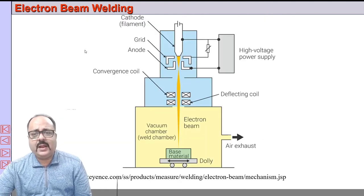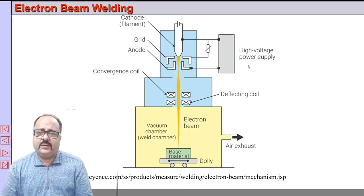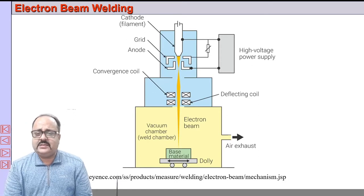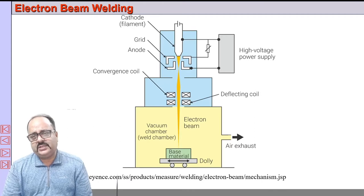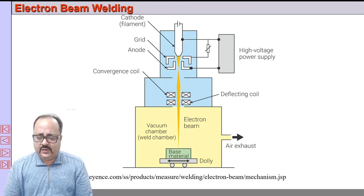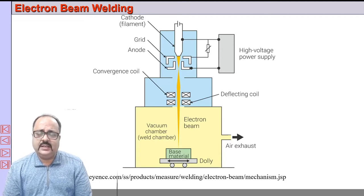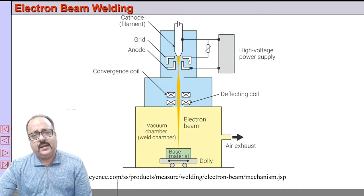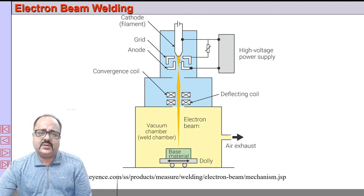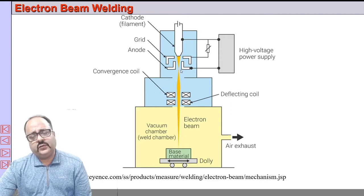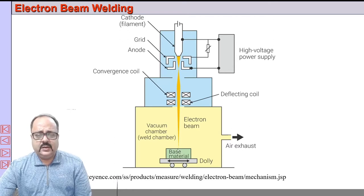A high voltage power source is applied, ranging from 30 kilovolts to around 170 kilovolts or more. The normal range is around 30 to 60 kV for medium voltage, and 100 kV and above for high voltage. This voltage is applied between a bias grid, the tungsten filament, and the anode. Due to thermionic emission, electrons are emitted, then accelerated by the anode. They converge to a point called the crossover, then diverge and converge again onto the workpiece surface.